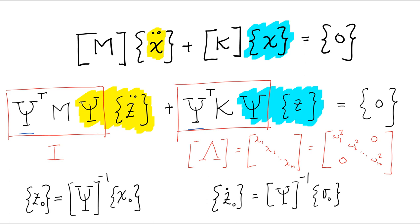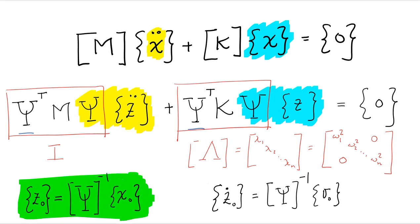So we can then take the initial conditions and express them in the modal coordinates. And we get this equation down here. Simply by multiplying by the inverse of the mode shape, we get the initial modal coordinate.